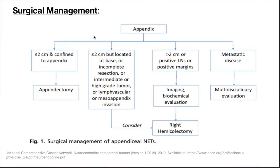For surgical management of appendix NETs: 2 cm is the landmark. Less than 2 cm and confined to appendix — appendicectomy is sufficient. Less than 2 cm but at the base, incomplete resection, intermediate or high grade with lymphovascular invasion or mesoappendix invasion — consider right hemicolectomy. Tumor more than 2 cm or positive lymph node or positive margin — right hemicolectomy should be done. Metastatic disease — multidisciplinary evaluation.